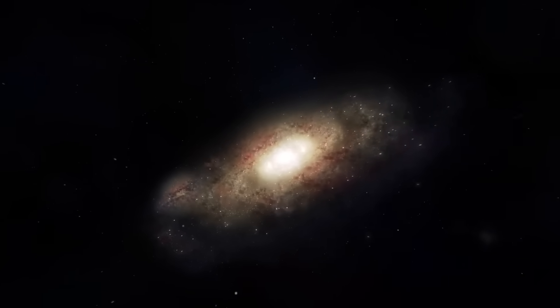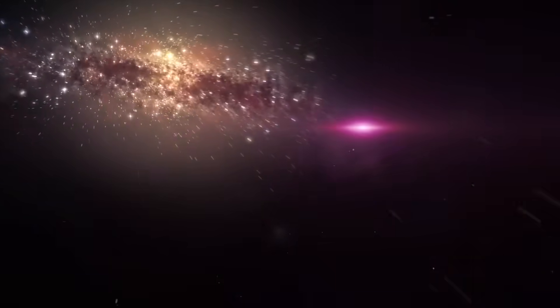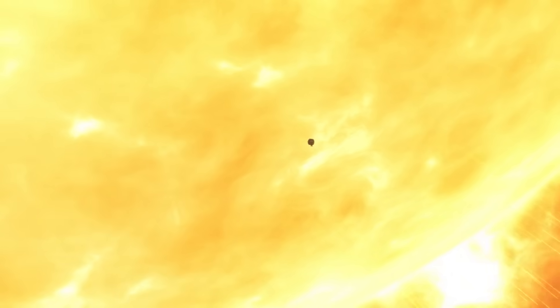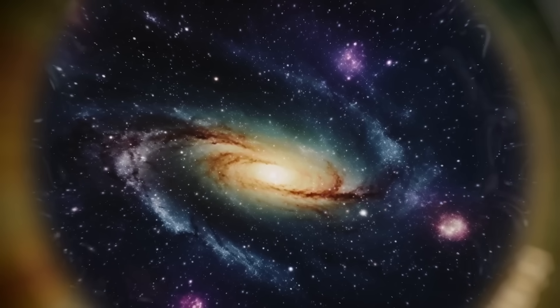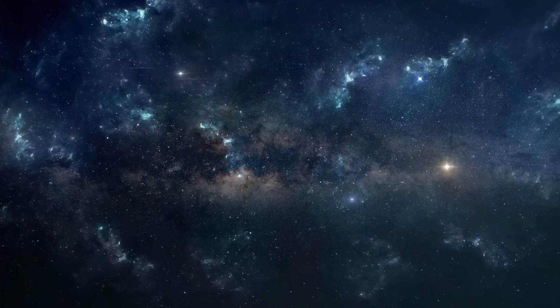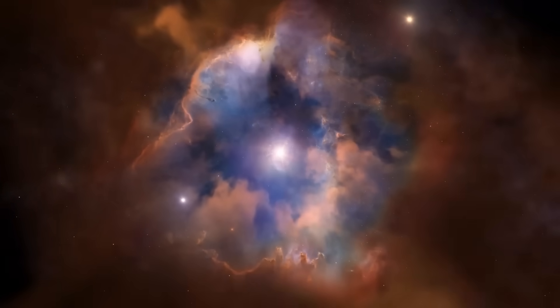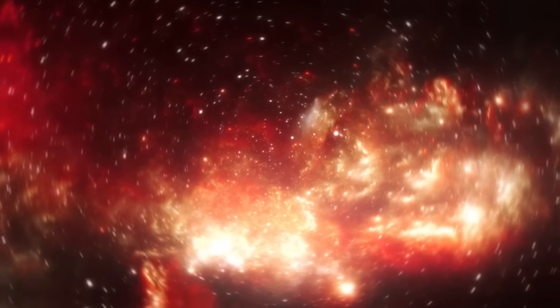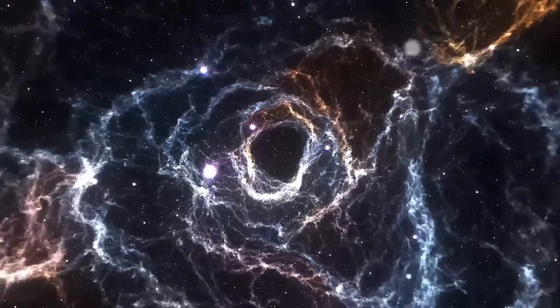On its penultimate approach, Parker's onboard plasma imaging tools captured something bizarre. Columns of highly charged particles, plasma filaments, reaching out from the sun's corona. These weren't the usual solar prominences. These were structured, thin, and unnervingly symmetrical. Some extended thousands of kilometers outward, moving in a way that suggested guidance, not explosion.